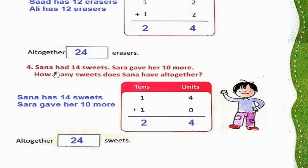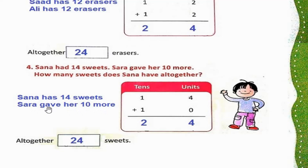Question number 4: Sana had 14 sweets. Sara gave her 10 more. How many sweets does Sana have altogether? Sana ke paas 14 sweets hain — Sana کے پاس 14۔ Sara gave her 10 more — aur Sara ne Sana ko 10 aur sweets dīn. Ab hamen maloom karna hai ki Sana ke paas total sweets kitnī hain.